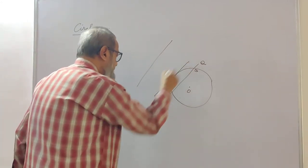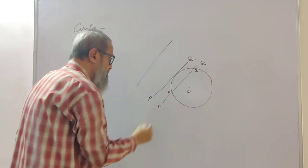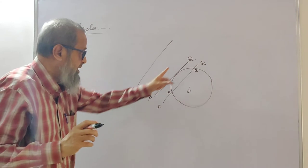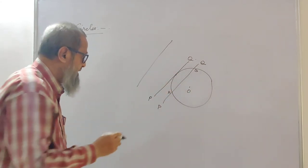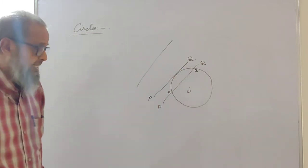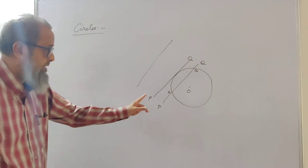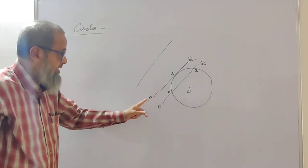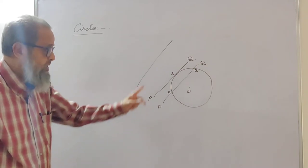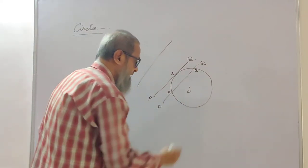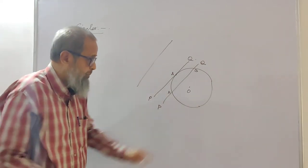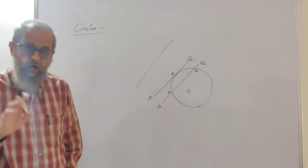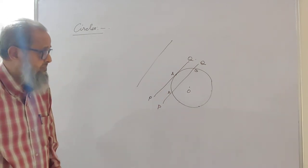If I draw a line PQ that touches the circle at only one point, there is one point of contact between line PQ and the circle. This line, which has a single point of contact, is known as the tangent to the circle. At any point on the circumference of a circle, we can draw only one tangent — it is not possible to draw more than one tangent at any given point on the circumference.